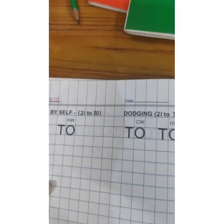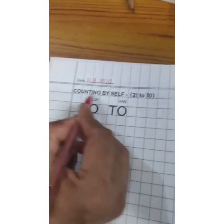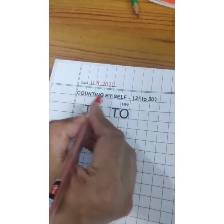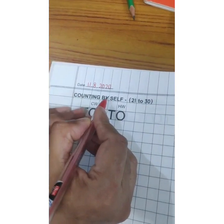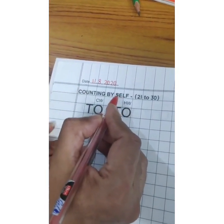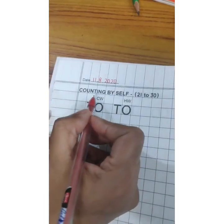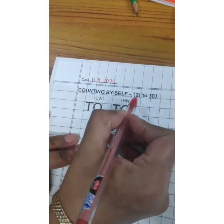Okay, now see. Today's work is counting by self. Counting by self, what is happening? You have to do your counting two, three times.